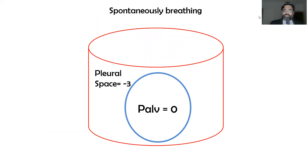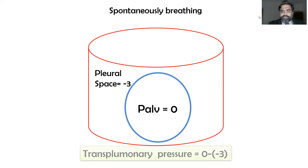Let's review the concepts of transpulmonary pressure. Normally, the pleural pressure is around minus 3 to minus 4, and the alveolar pressure is 0. The transpulmonary pressure is the inside pressure minus the outside pressure: 0 minus (−3) equals +3. That is the reason our alveoli remain open and do not collapse.